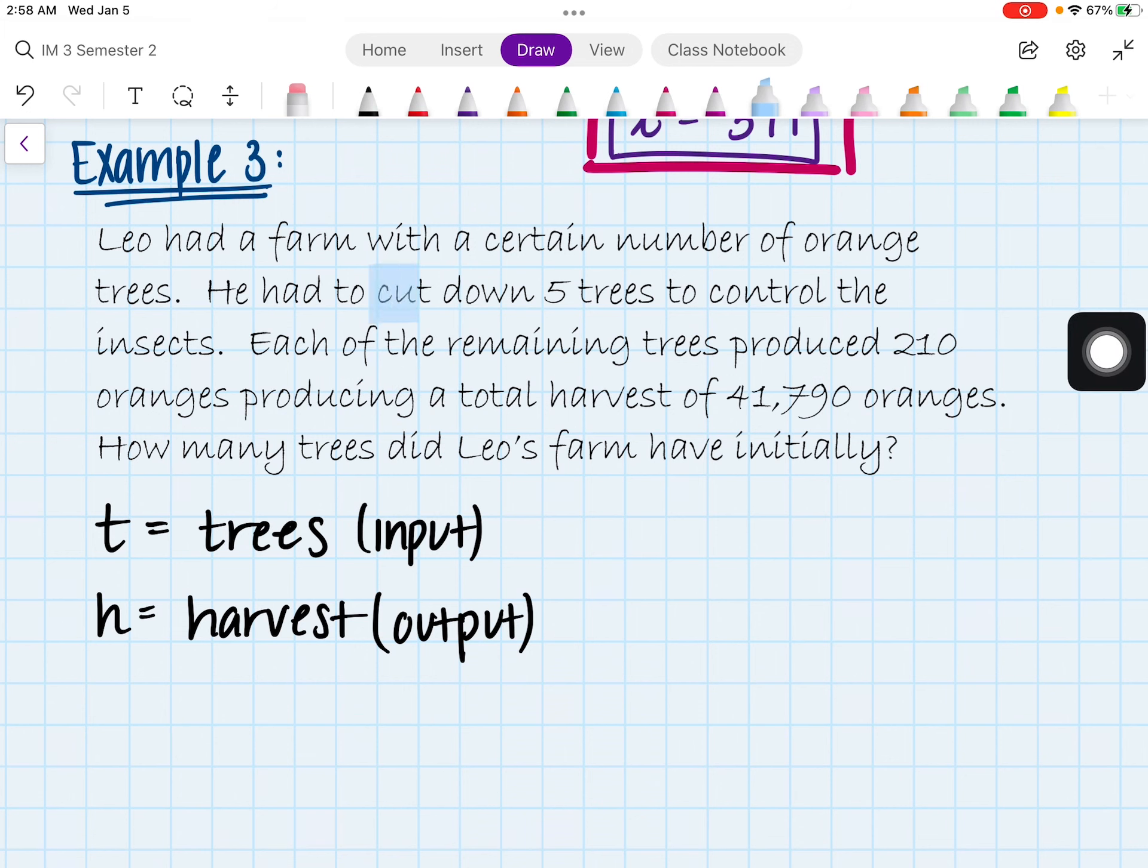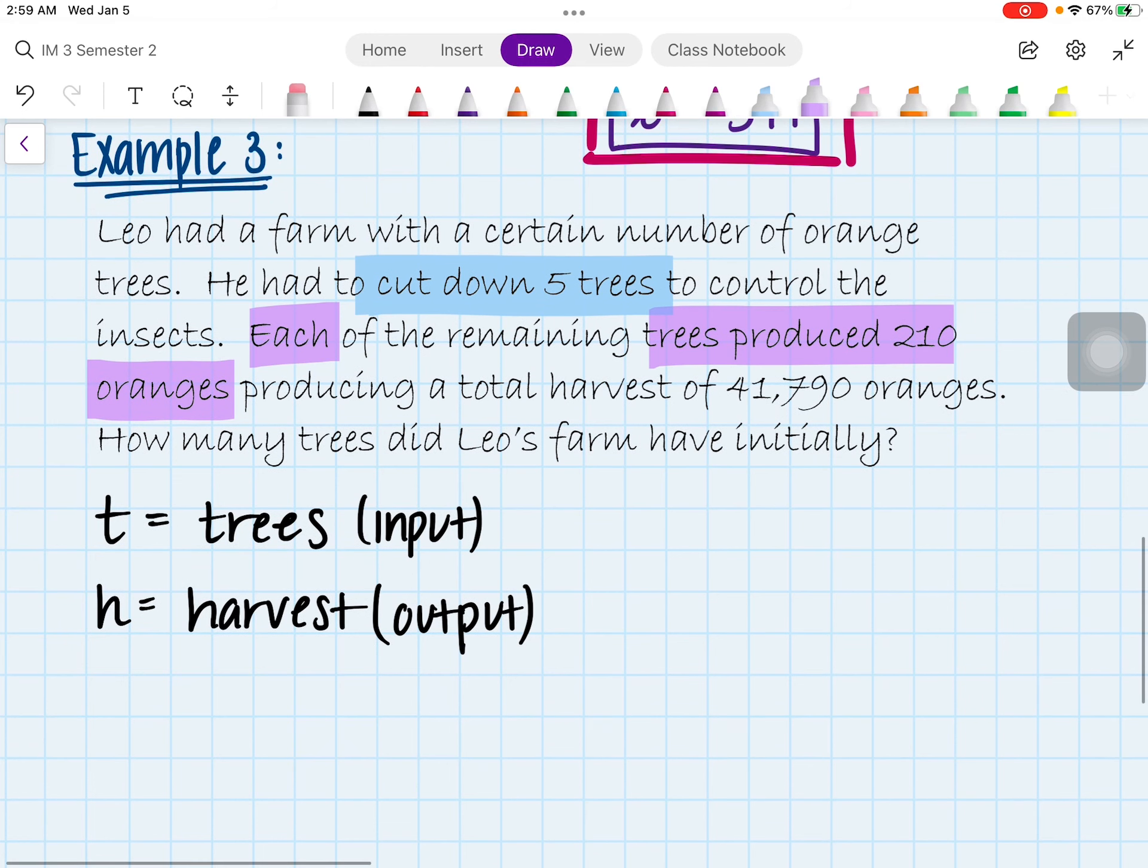It says he had to cut down five trees to control the insect pest, which means that he's actually losing trees. He's losing five of them. Another thing they're telling us is that each of the trees produces 210 oranges. And they're also telling us that their total harvest was 41,790 oranges. So the goal in this case is to actually find how many trees they had in the beginning.